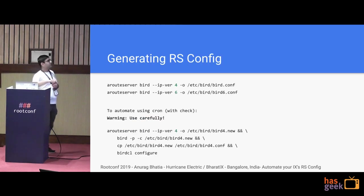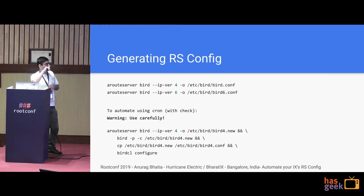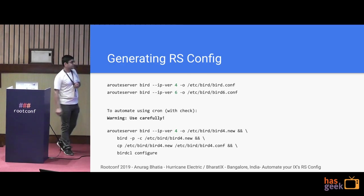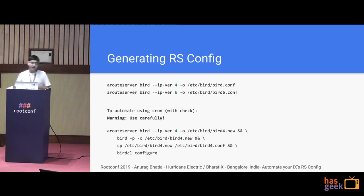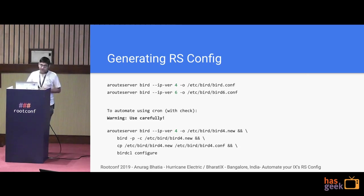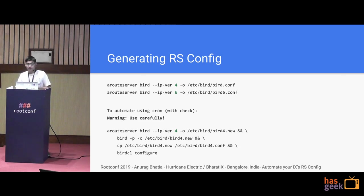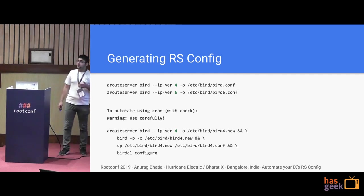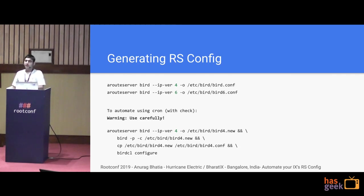Here's an example of generating the config. You run ARoute Server and specify the daemon name, IP version, and destination where you want the config — we use the location of the BIRD config directly. If you want, you can use a separate location and do a diff before committing to production. You can set this up with a cron job for automatic filter regeneration. At Bharat IX, we run a cron job every hour on both route servers. Both route servers regenerate their entire config staggered by 30 minutes — one at the 0th minute and the other at the 30th minute. There are checks in place so that if internet connectivity is broken and the package can't generate config, it will halt the process.